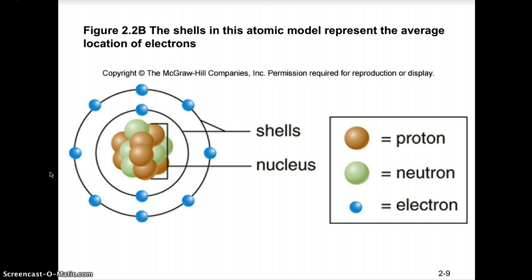In this second diagram you can see the same atom with protons as orange spheres and neutrons as green spheres, but now electron shells are shown explicitly, with blue spheres representing the electrons. This is a Bohr model, which differs from the electron cloud model in that it shows electrons found at fixed distances from the nucleus.